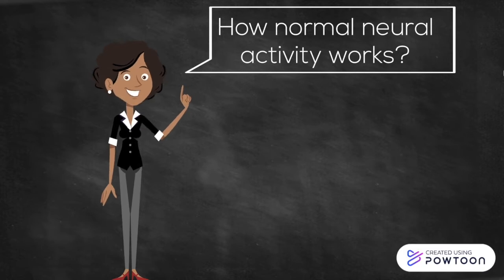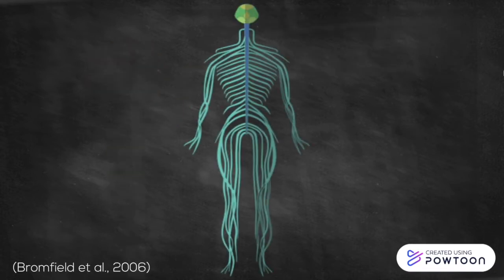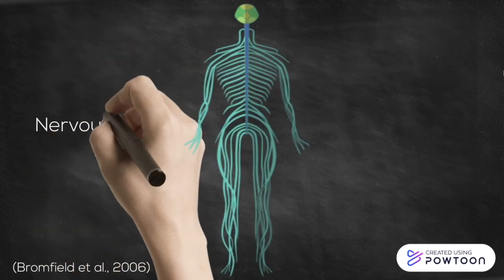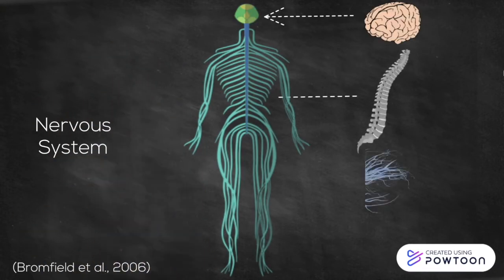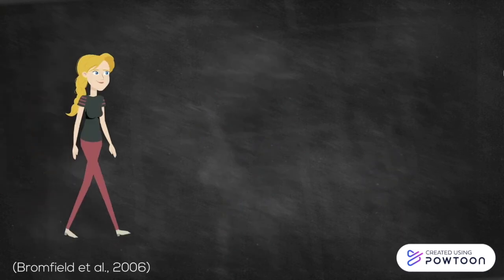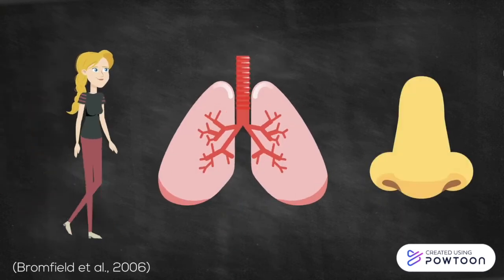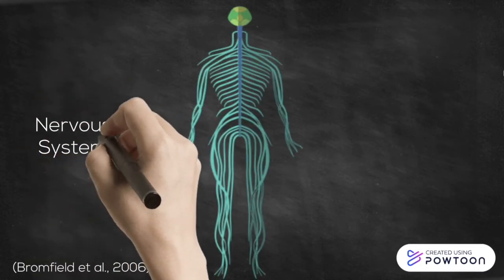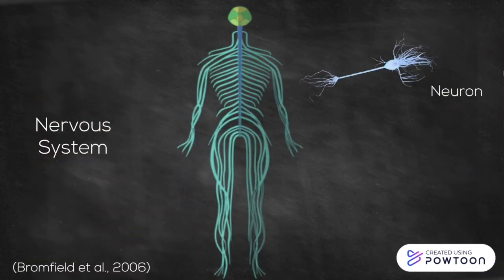Before we get into the mechanisms of focal seizures, let's first take a look at how normal neural activity works. The nervous system is a complex network made up of the brain, spinal cord, and nerves. The nervous system allows us to receive sensory information to coordinate actions and other responses within the body. It controls things like your ability to walk, breathe, and smell. Signals are sent across our nervous system using neurons, which are nerve cells that transmit signals to and from the brain.